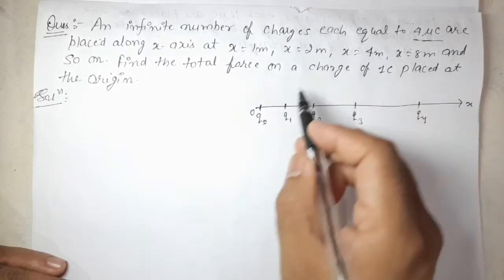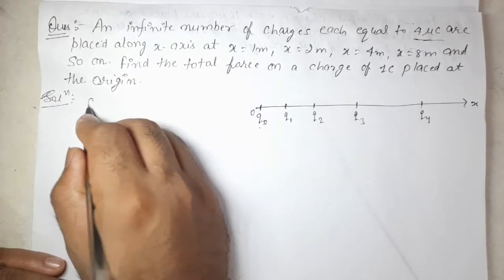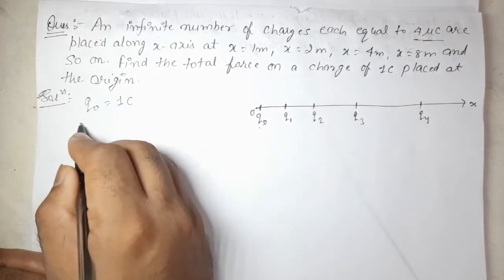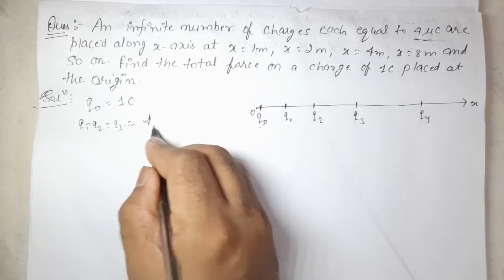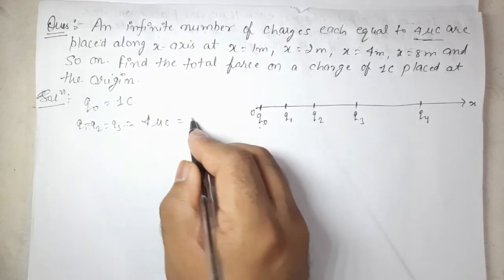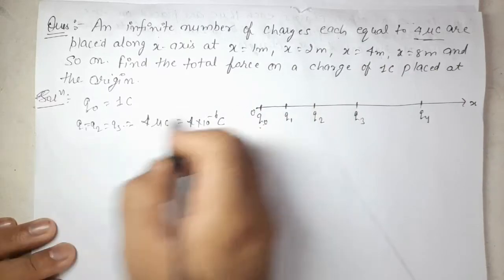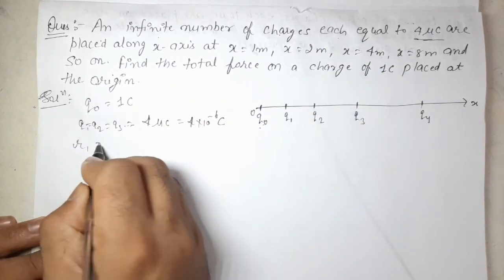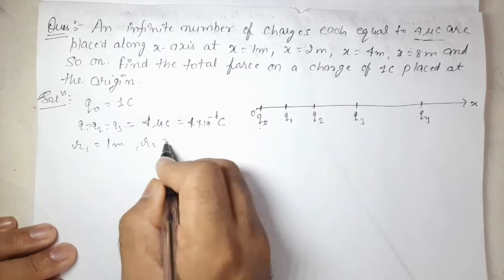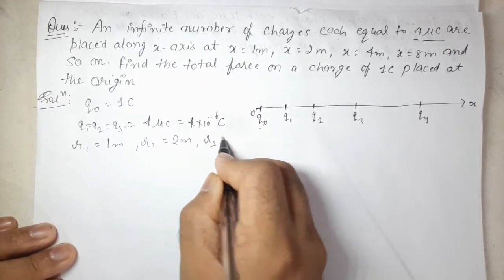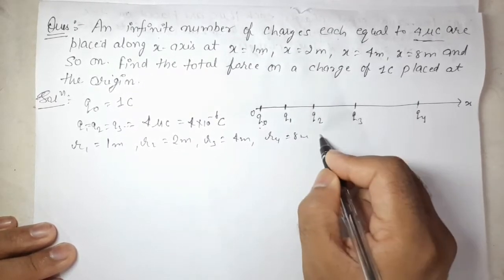Now we need to calculate the net force exerted on Q0 by all these infinite charges. The given values are: Q0 = 1 coulomb; Q1, Q2, Q3... are all equal to 4 micro-coulomb, i.e., 4 × 10⁻⁶ coulomb. The distances are: R1 (between Q0 and Q1) = 1 meter, R2 = 2 meter, R3 = 4 meter, R4 = 8 meter, and so on — 16, 32, 64, continuing in this manner.